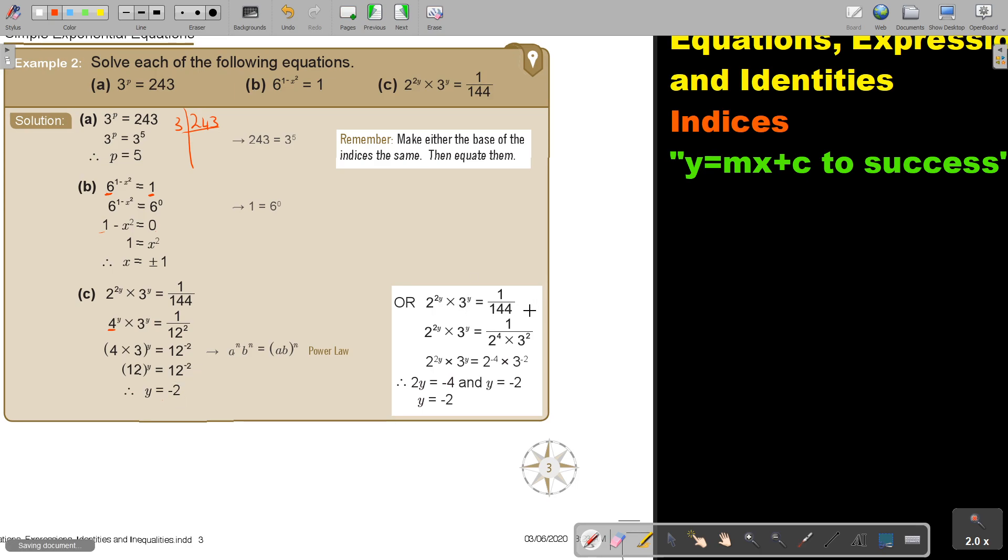Other method, let's look at another method. I'm breaking this up also into prime factors, and I'm getting this. And now I say this equals this. Did you see? And this equals this. And then I actually form 2 equations, and I will get that y equals negative 2.